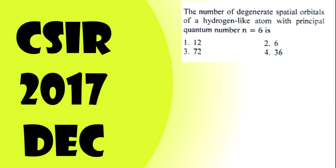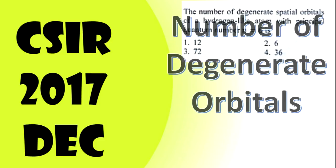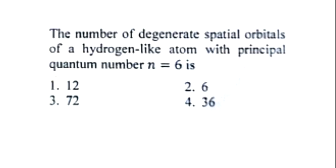Let us see a question which was asked in December 2017. The question asks about the number of degenerate spatial orbitals of a hydrogen-like atom with the principal quantum number n equal to 6. The options given are 12, 6, 72, and 36.